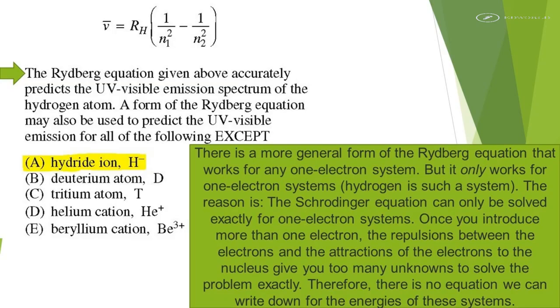There is a more general form of the Rydberg equation that works for any one-electron system. But it only works for one-electron systems, hydrogen is such a system. The reason is, the Schrodinger equation can only be solved exactly for one-electron systems. Once you introduce more than one electron, the repulsions between the electrons and the attractions of the electrons to the nucleus give you too many unknowns to solve the problem exactly.